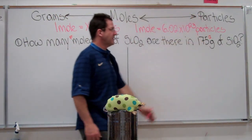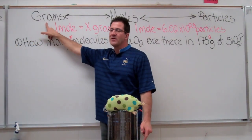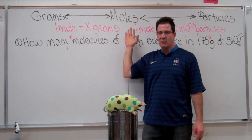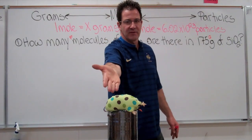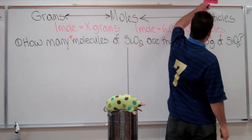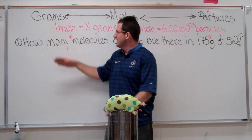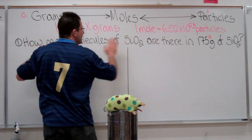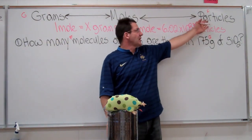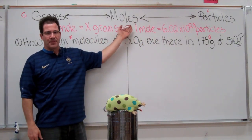Let's write that down on our map up here. This is kind of our map. This tells us: if we're here in Gramville and we want to go to Particleville, we have to go through Moleville. We're trying to find molecules — molecules, particles, atoms — all the same thing. In this case, we have grams, so we're in Gramville. This is what we've been given. This is what we're trying to find, so we need to get to Particleville through Moleville.